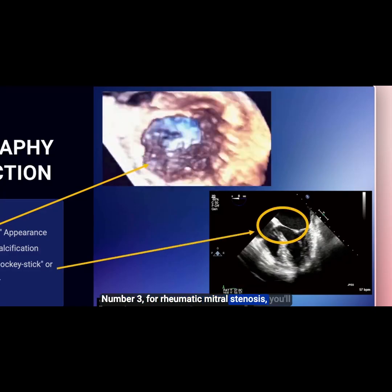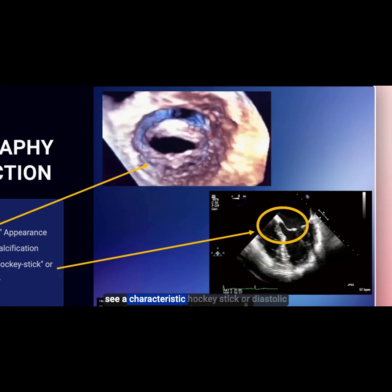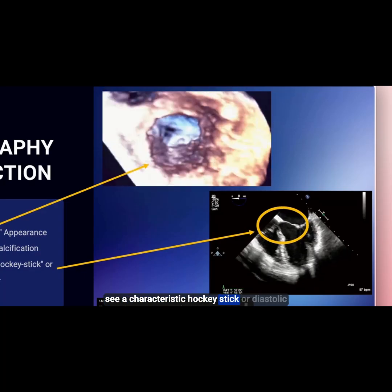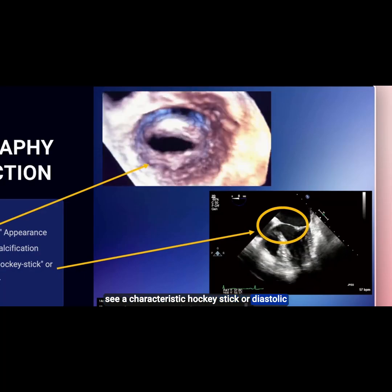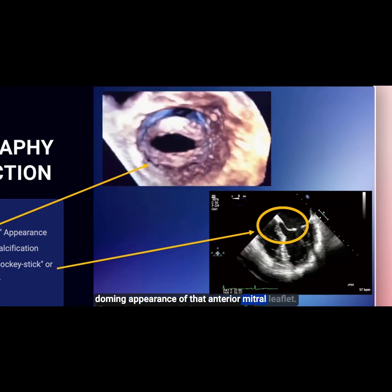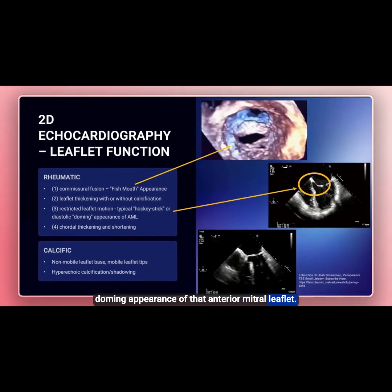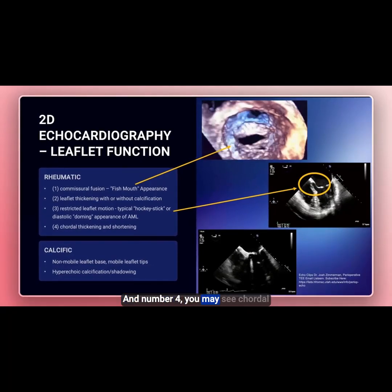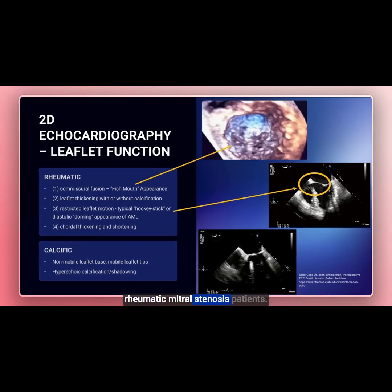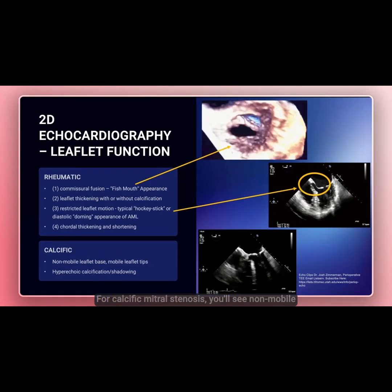For rheumatic mitral stenosis, you'll see a characteristic hockey stick or diastolic doming appearance of that anterior mitral leaflet. And number four, you may see chordal thickening and shortening in these rheumatic mitral stenosis patients.